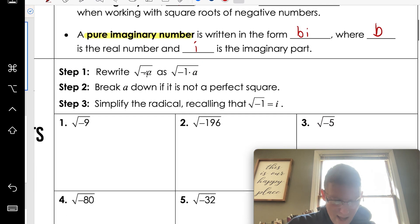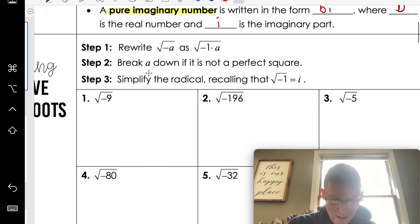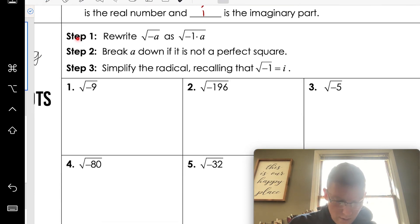So if we were to actually do one of these things, what would happen is, we would have a negative sign under the square root. So we would rewrite it as negative one times that same number, break it down if it is not a perfect square, we've been doing this, so we should be pretty good at that, and then simplify the radical knowing that i is equal to negative one. Long story short, all it is, is this negative sign, when it comes out of the square root, it turns into an i. That's it.